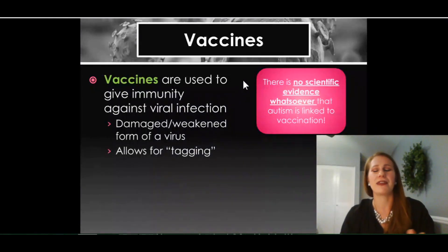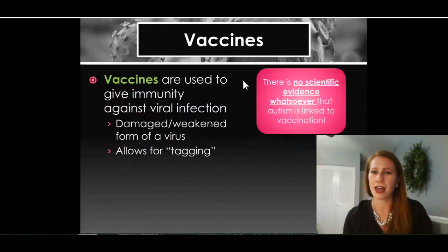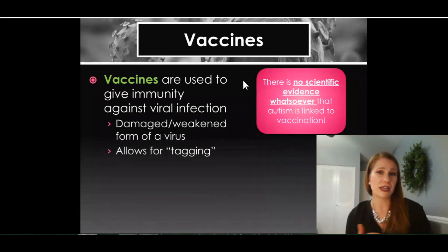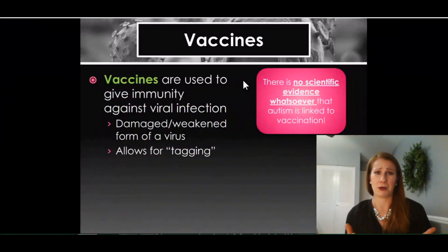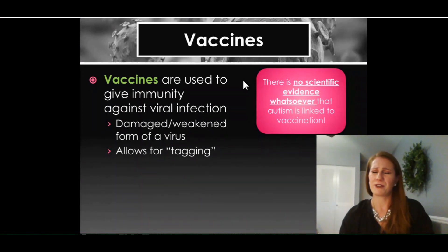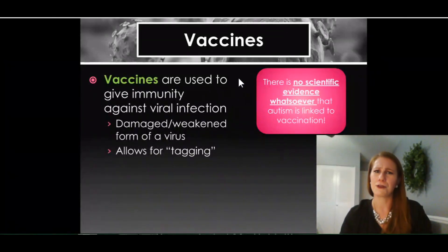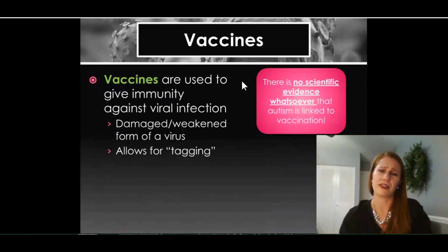Before I move on, I get this question asked every year from students: there is no scientific evidence that autism is linked to vaccination. There was, in the mid-1990s, a scientific paper published that said there might be a link. This paper has now been disproven hundreds of times. The person who wrote it was thrown out of science and it was widely discredited. But for some reason people like to bring up that bad article over and over again. Today people would refer to it as fake news — there is no scientific evidence linking these two things together.